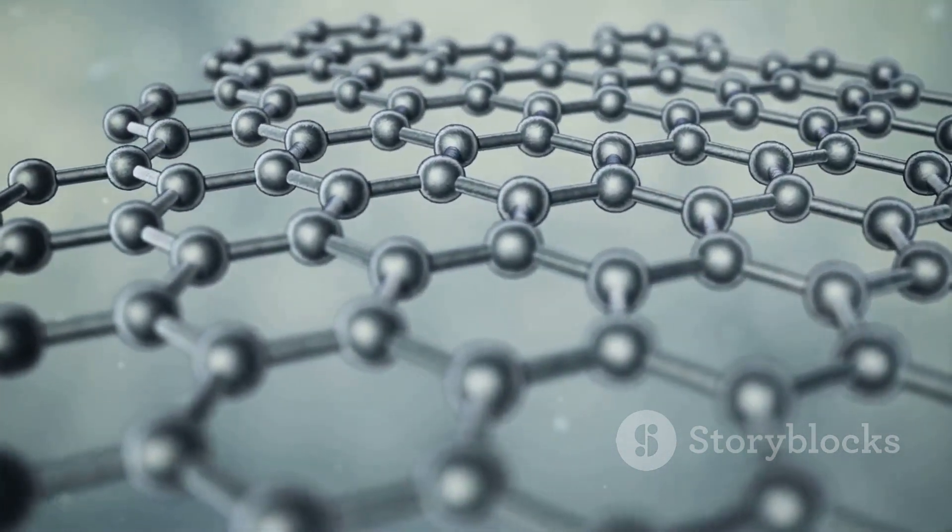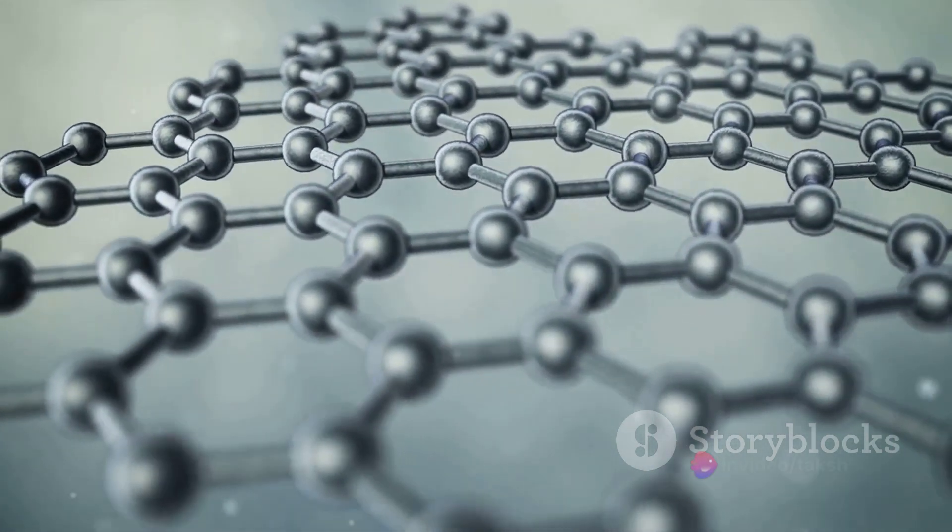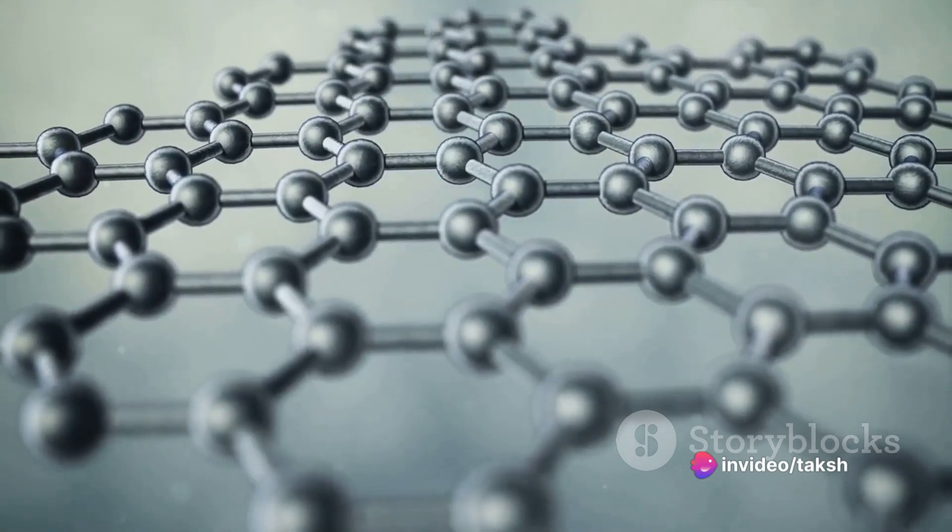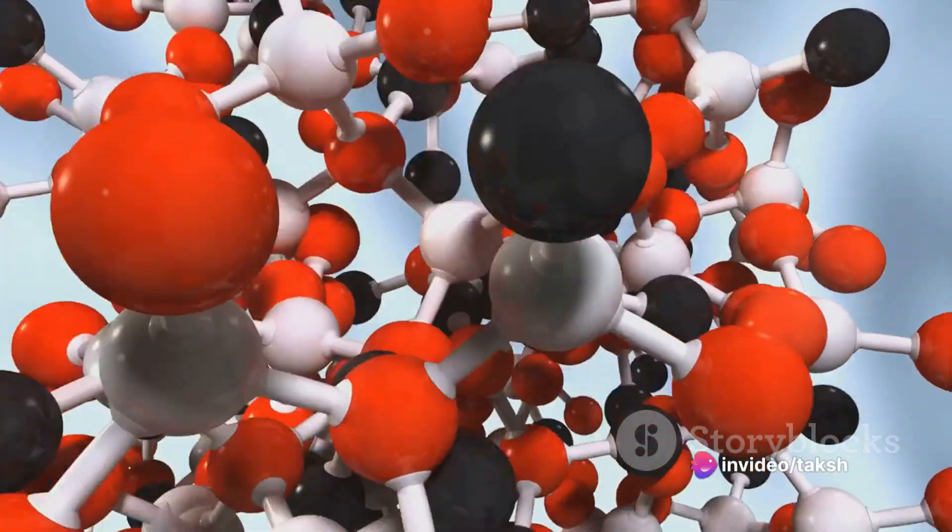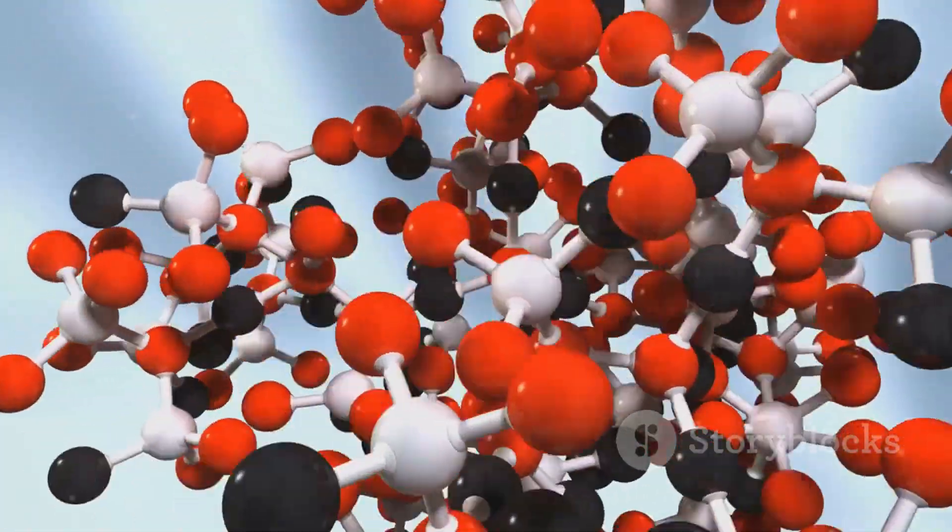Catenation is the ability of carbon atoms to link with each other, forming long chains or rings. This ability, combined with carbon's capacity to bond with other elements, allows it to form nearly 10 million different compounds. Take a moment to appreciate the diversity and complexity that comes from this one element.